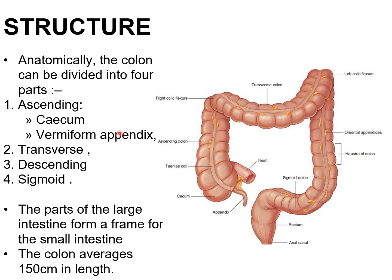About its structure — anatomically, the colon can be divided into four parts: ascending colon, transverse colon, descending colon, and sigmoid colon.